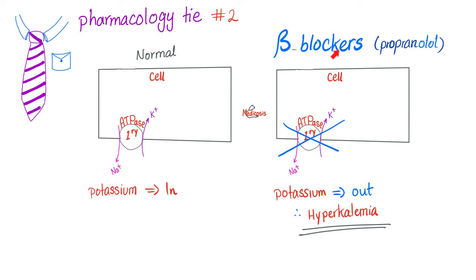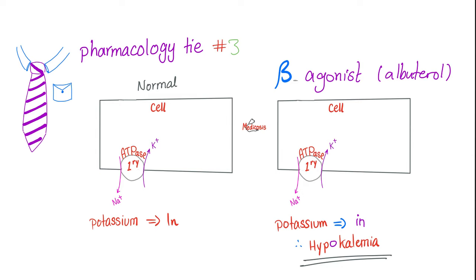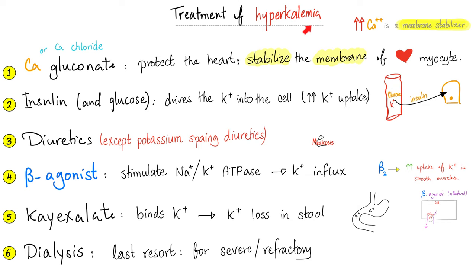As for beta agonists like albuterol, they boost the sodium-potassium ATPase, meaning more potassium goes in and less potassium is available in the blood — hypokalemia. That's why beta agonists can be used to treat hyperkalemia. Speaking of treating hyperkalemia: the first order of business is to protect the heart, because hyperkalemia can lead to arrhythmia.